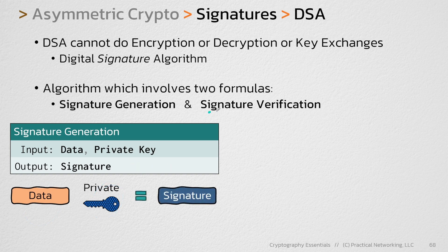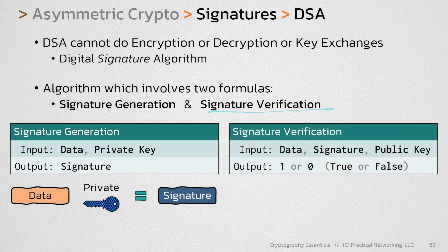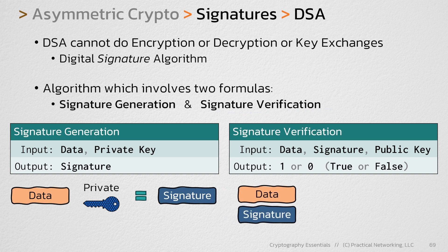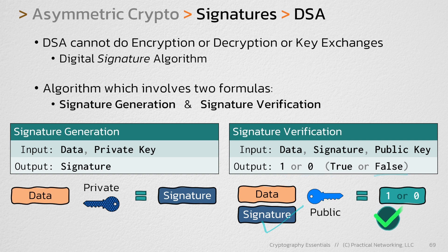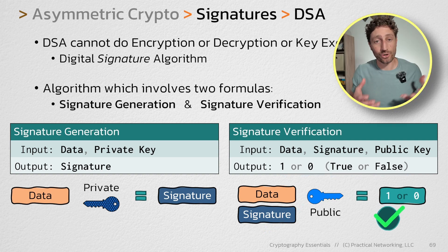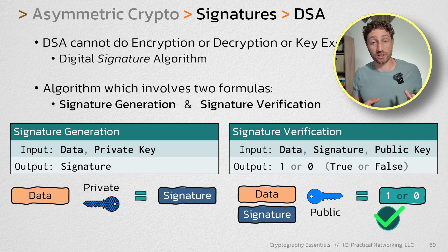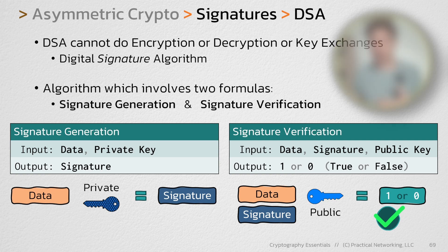To verify that signature, you would use the same data and the same signature and combine it with the public key. The output of that would be a 1 or a 0, indicating true or false whether the signature checked out or not. Notice there's no encryption or decryption occurring — it's simply creating a signature and verifying it.